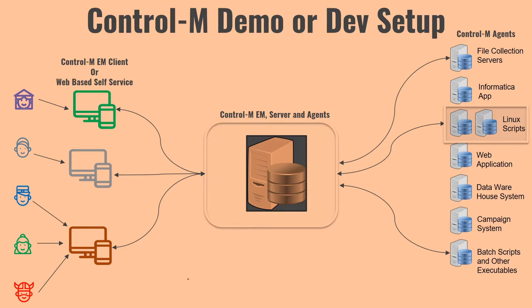To avoid all of that hassle, you can install Control M on a standalone machine — a single machine where all the Control M components will be installed. You can use a Windows or Linux machine and install Control M EM, Control M Server, and Control M Agent on the same machine. During installation, it will ask if you want to install all components on the same machine — just select that option and Control M will install everything for you.